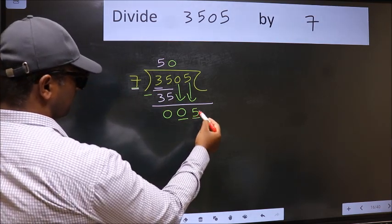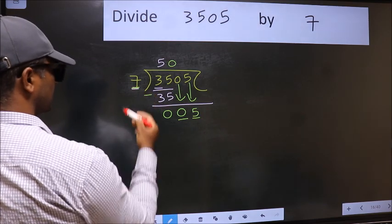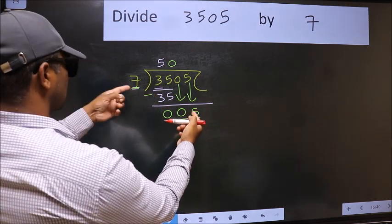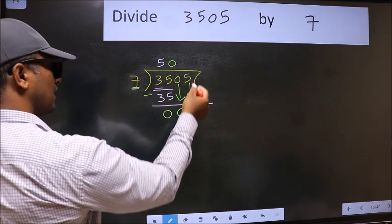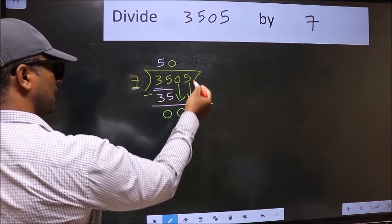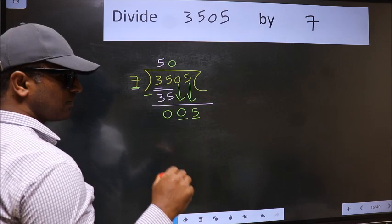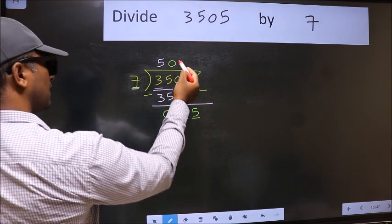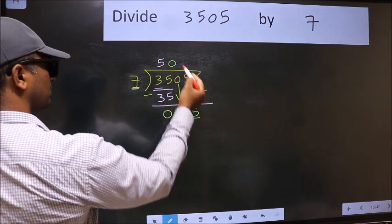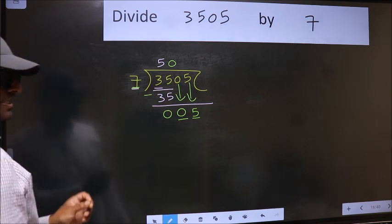And the mistake is this. Here we have 5 and here 7. 5 is smaller than 7. And we don't have any more numbers to bring it down. So what many do is they directly put dot, take 0. Which is wrong.